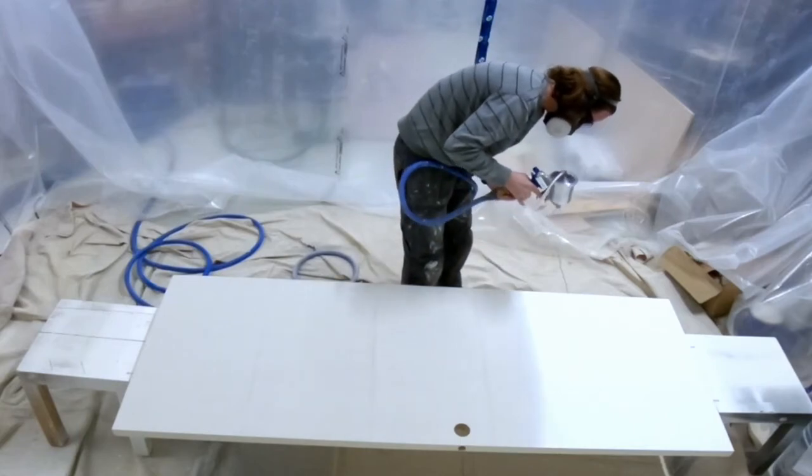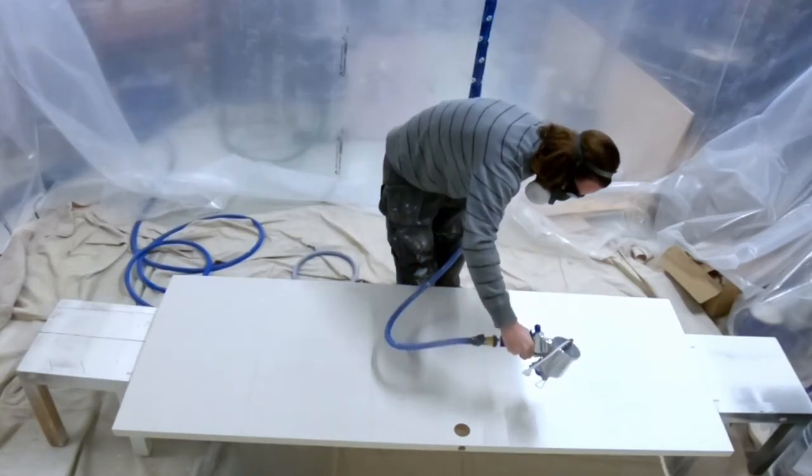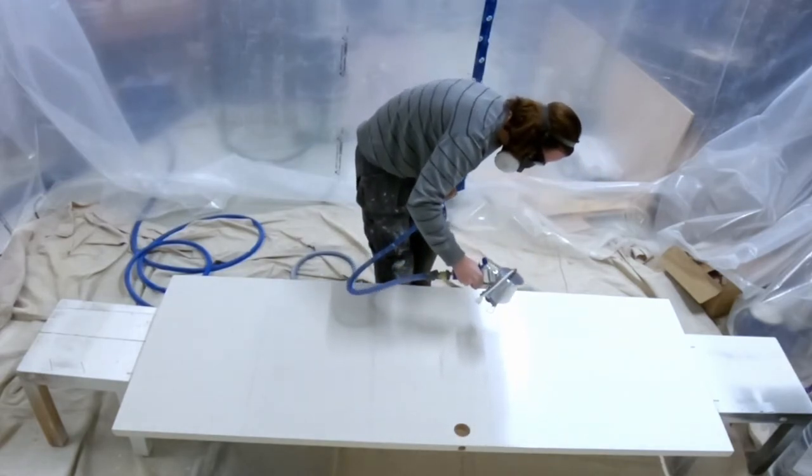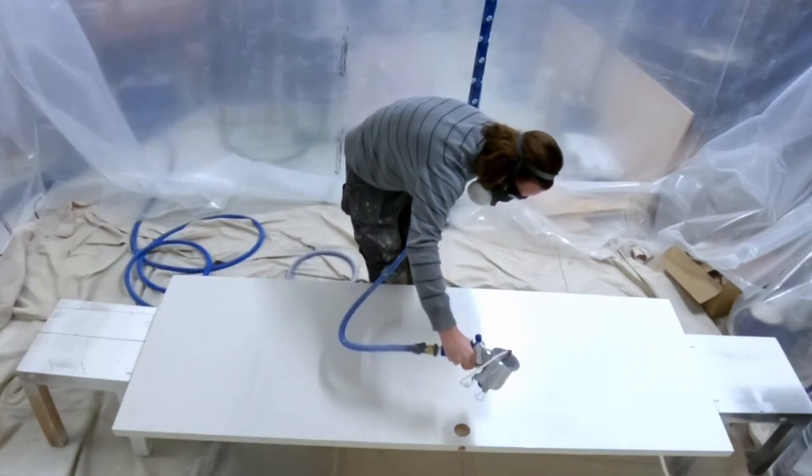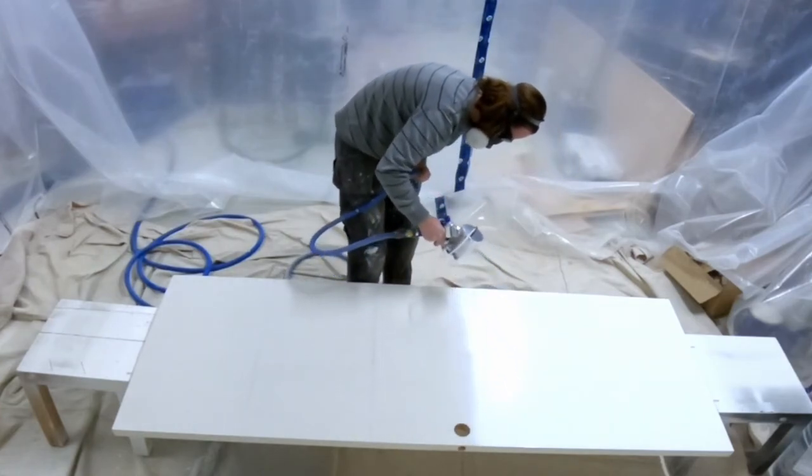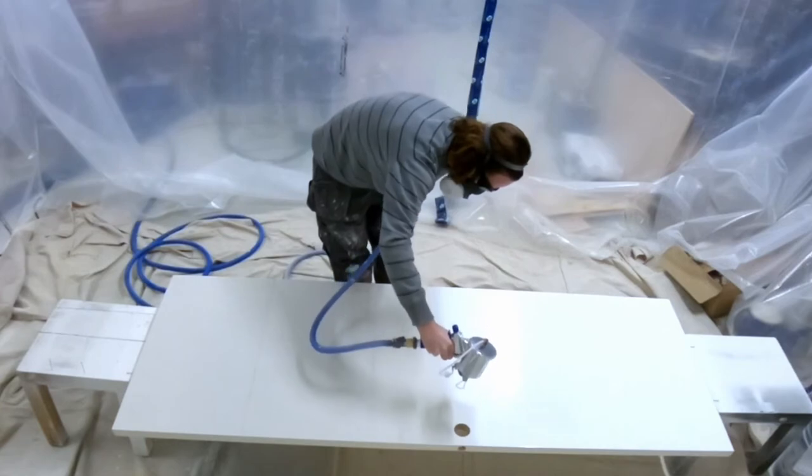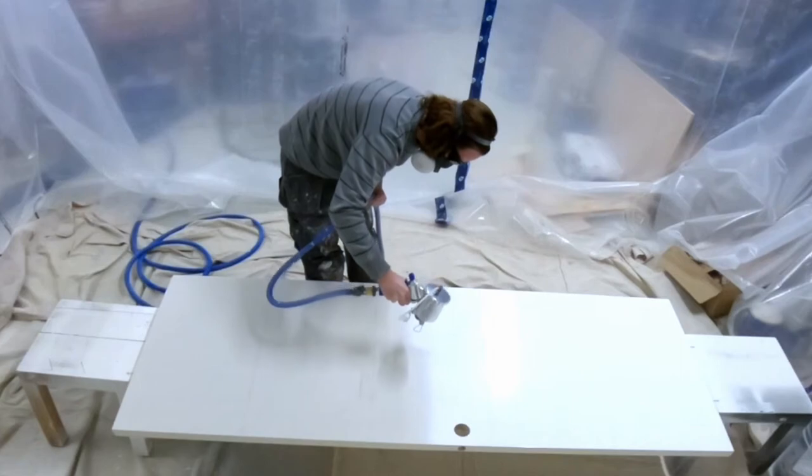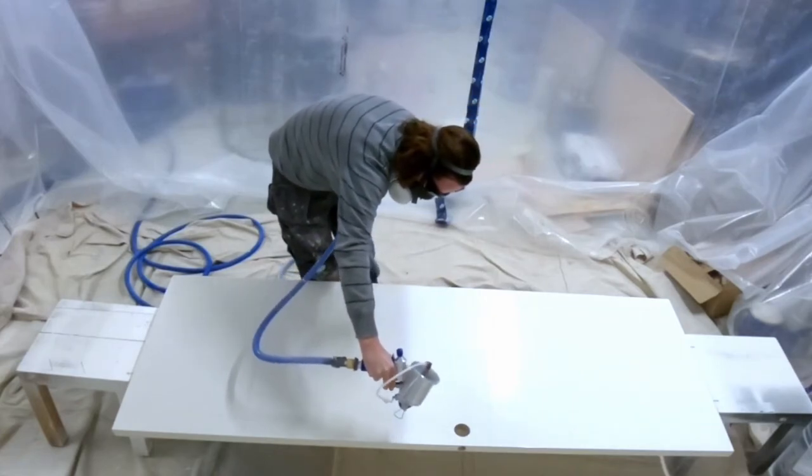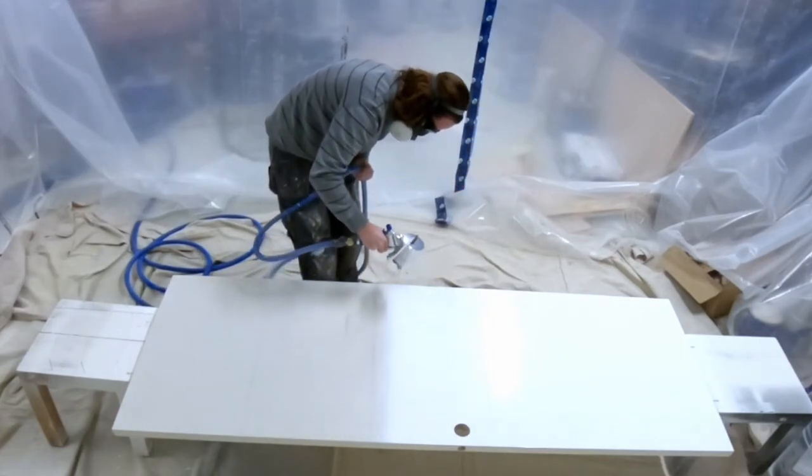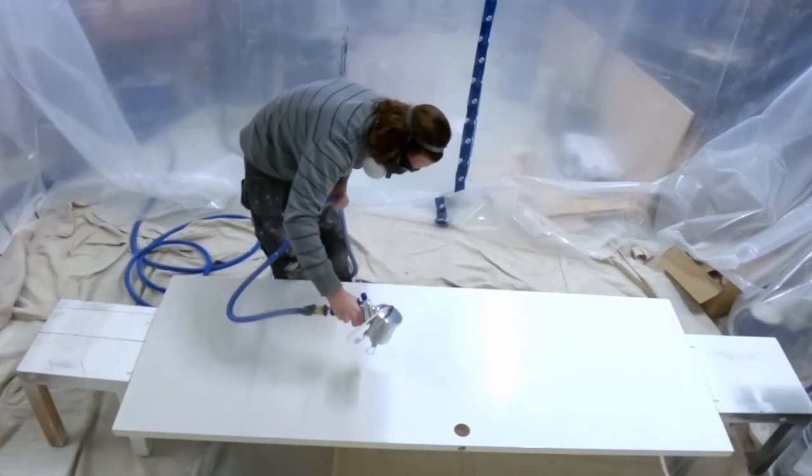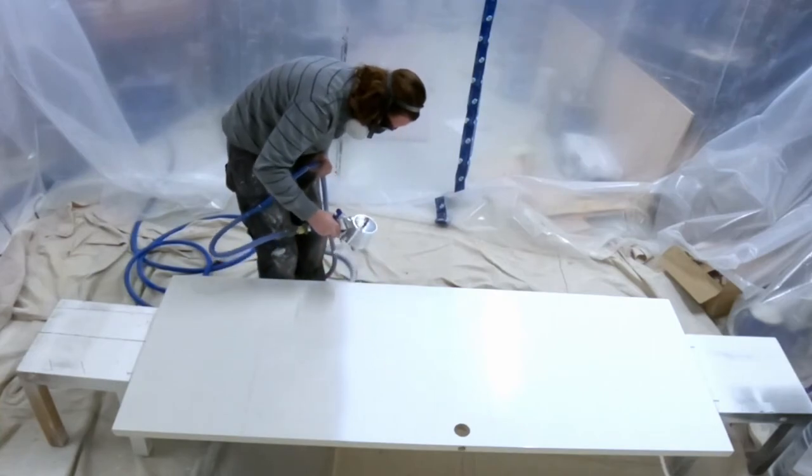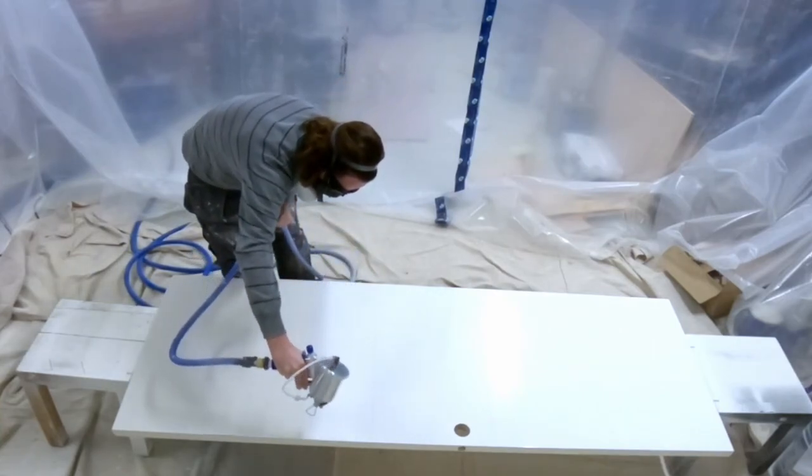So the larger units do allow you to run some thicker paints and allow you to run a slightly higher pressure as well. To get the latex paint down I have upped the size of the nozzle from what would come factory with the guns. So factory I believe it's a 1.3 or a 1.4 that will come with the gun. I've got a 2.2 millimeter nozzle that I'm using in this one and that is working with the thinned latex paint.